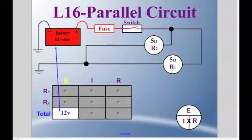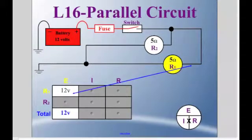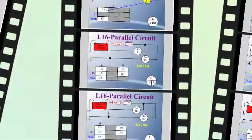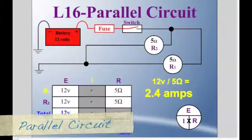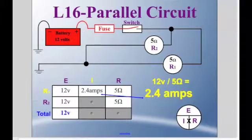Now if we look at resistor 1, we know that according to these laws that apply to parallel circuits, we're going to have 12 volts applied to the branch that has resistor 1. That will give us 2.4 amps of current flow. So we can put that in our chart, 2.4 amps.